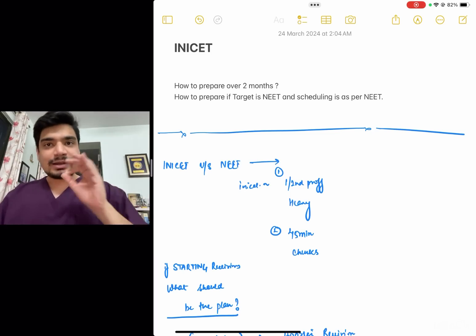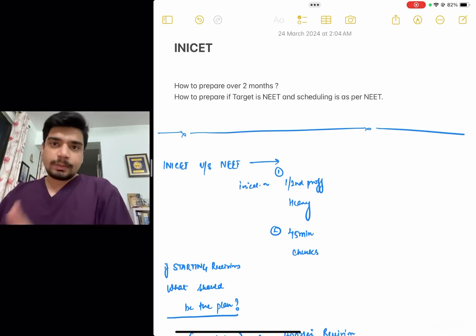The second is start practicing questions on Marrow or Prepladder in that 45 minute time bracket because a lot of people had problem. They were prepared, but they were 45 minutes apart.